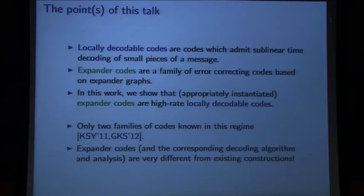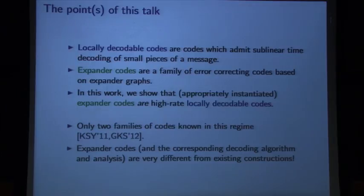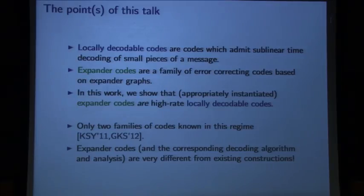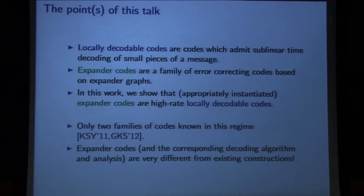The point of this talk is to tell you about how to make expander codes locally decodable or locally correctable. Locally decodable codes are error correcting codes that have a sublinear time decoding algorithm, so if you want only a small number of bits of the underlying message, you can get these back by reading only a small number of bits of the corrupted code word. Expander codes are codes created by putting symbols on the edges of expander graphs, and the point of this work is to show a decoding algorithm for this type of code that's sublinear time.